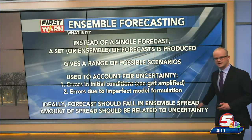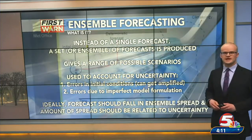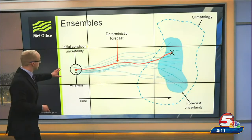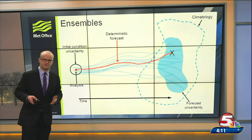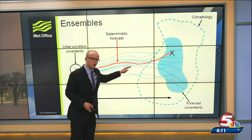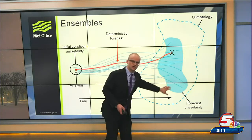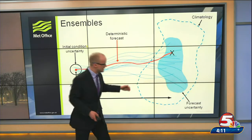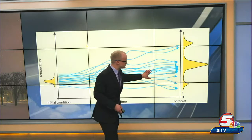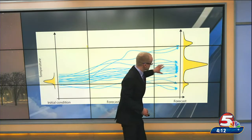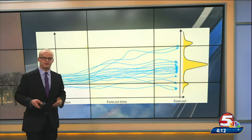Ideally our forecast should fall into that ensemble spread we create, and the amount of spread in that ensemble forecast should be related to the amount of uncertainty or confidence we have. Here's a schematic of what ensemble forecasting looks like. We start off with our initial conditions, and as we go out in time, instead of one deterministic forecast, we slightly tweak these initial conditions to create a much wider envelope of possible solutions. How large this spread is determines how much uncertainty we have. The larger groupings of runs indicate a more likely outcome — that's the beauty and power of ensemble forecasting.